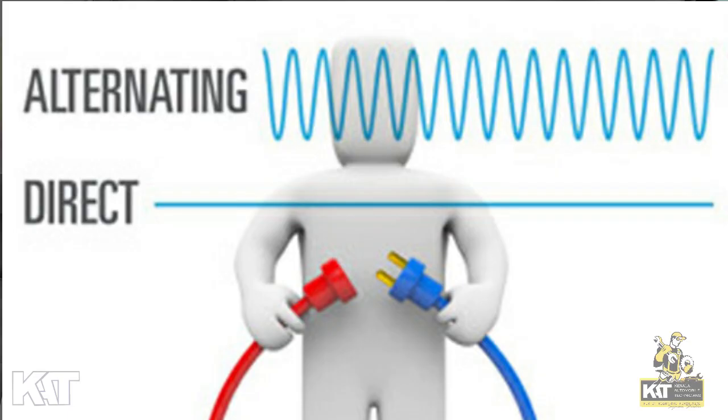Voltage is represented by the symbol V. There are two types: DC voltage and AC voltage. DC voltage is direct current voltage, where we have electrical pressure on a straight line.